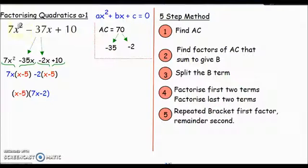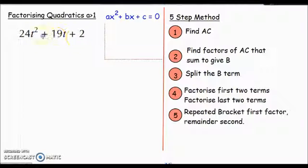What I want you to do now, as I've gone through that quite quickly, is have a go at a question. I'll leave the method up. Have a go at factorizing this: 24t² + 19t + 2. Pause the video, come back, and we'll go through it. Hopefully you've had a go at this question. Let's see how you did.